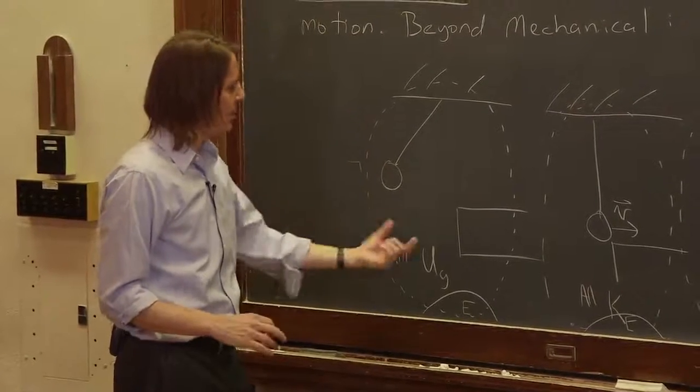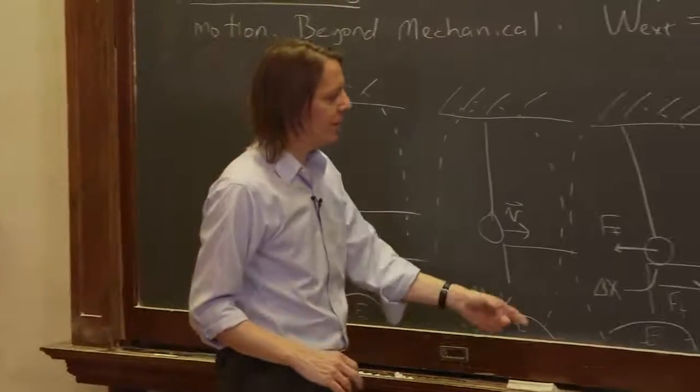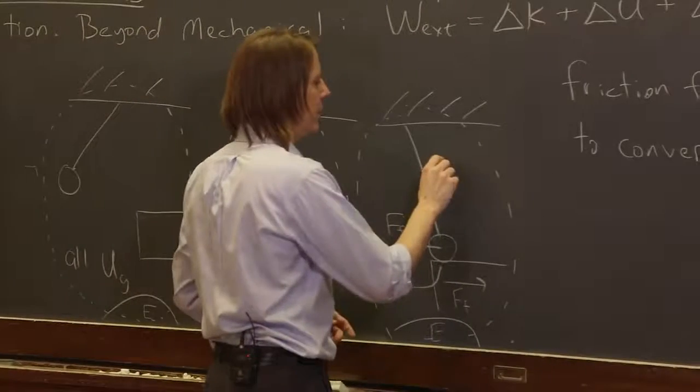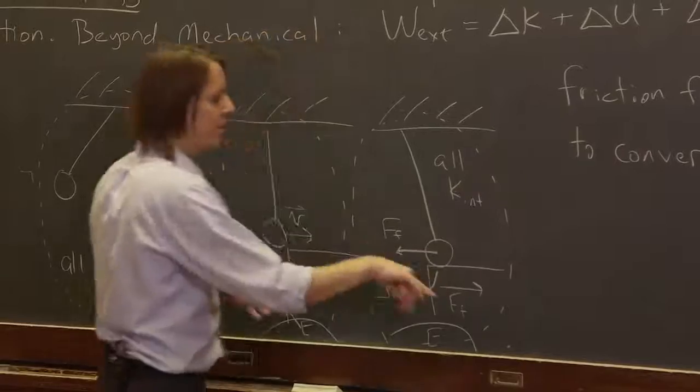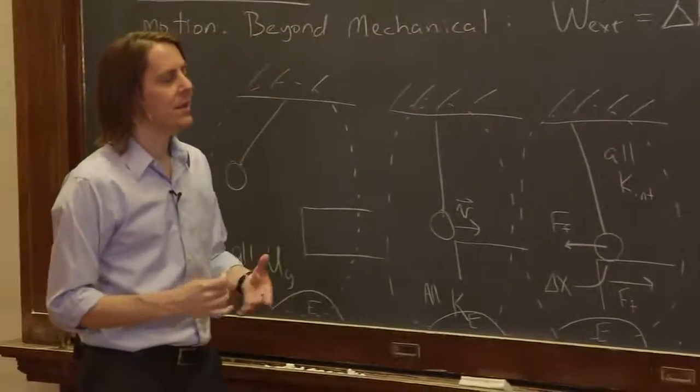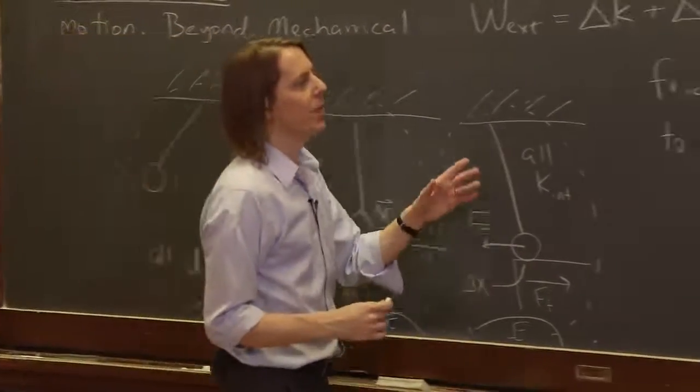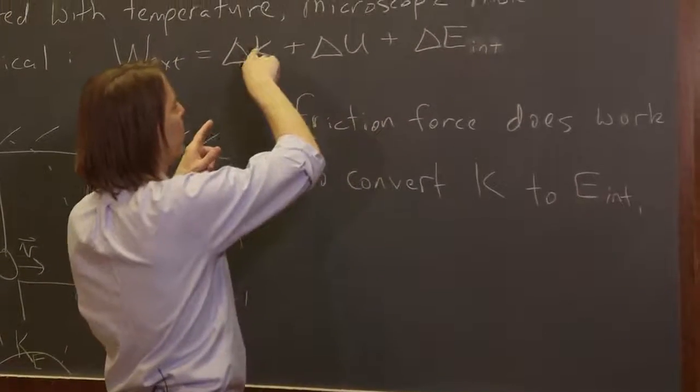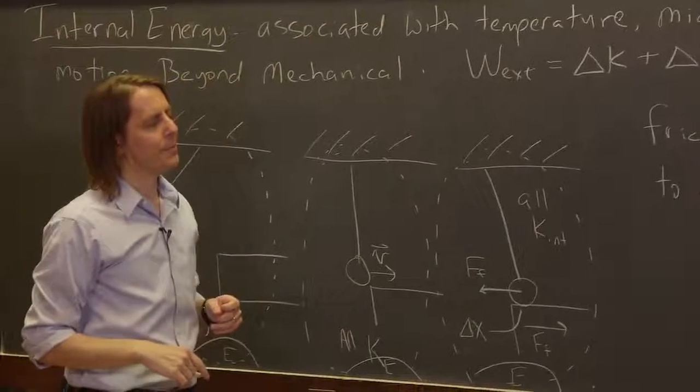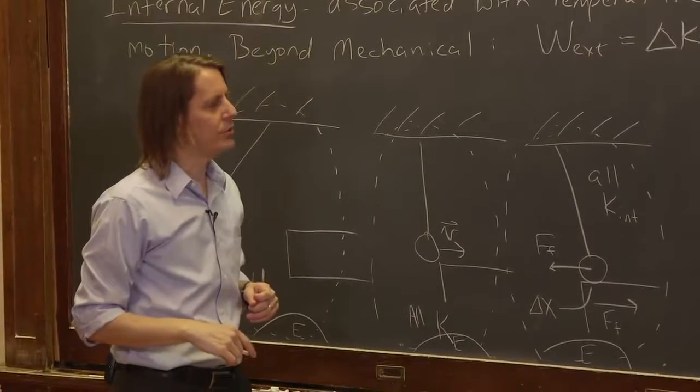And if we think about the energy, here it was all potential, here it was all kinetic, and here it's all internal. Because all that energy was just converted into heat. And the mechanism that allowed it to happen was the friction force. Friction was the work that let us convert with internal work from kinetic to internal energy.